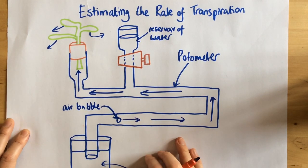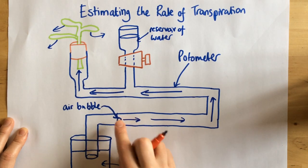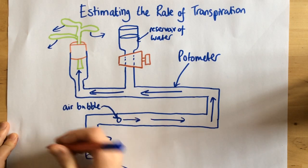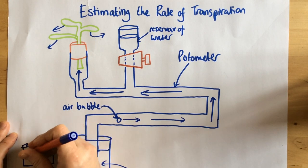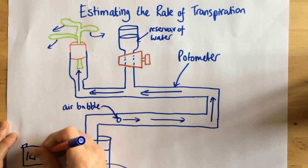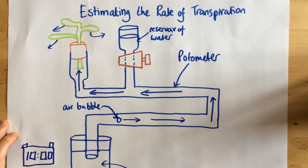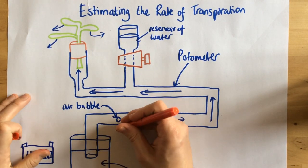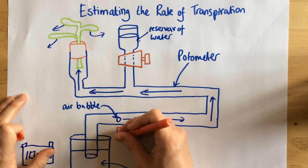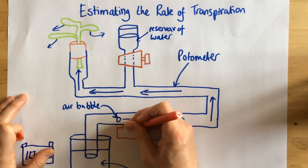Now, how we estimate the rate of transpiration is we need to see how this air bubble moves over time. So let's say we're going to time our experiment and we're going to leave it for 10 minutes on my stop clock down there. Okay, now what I need to do is I need to get a ruler. So here's my ruler right here.